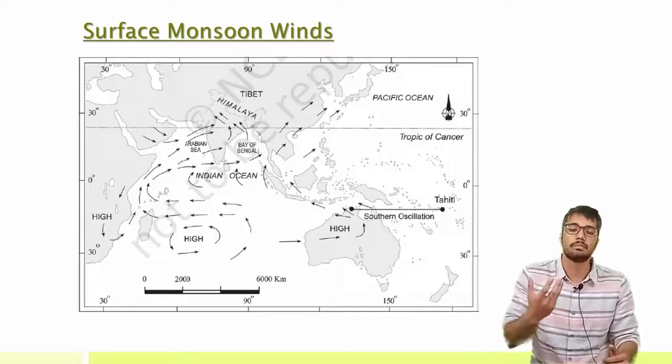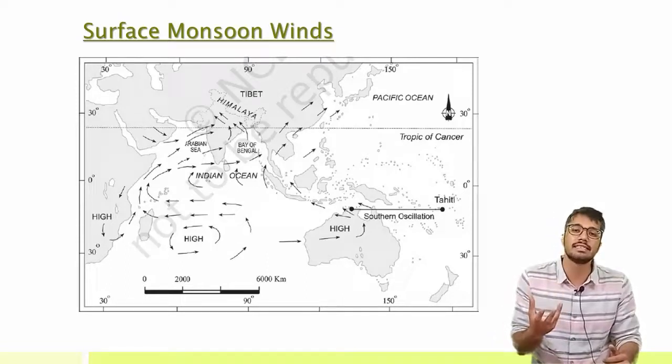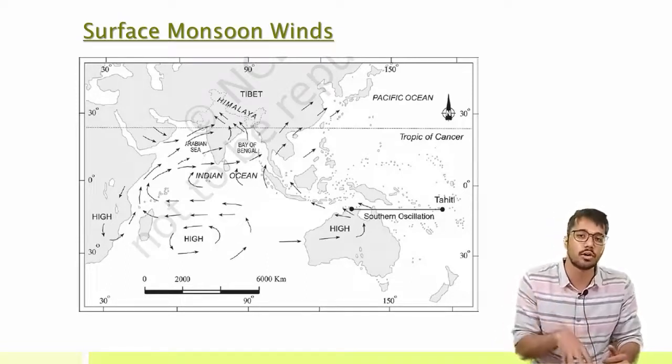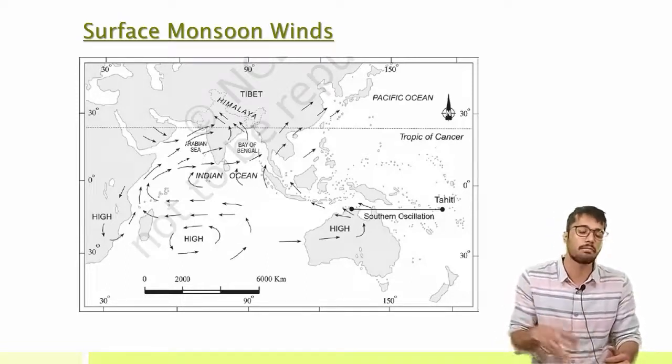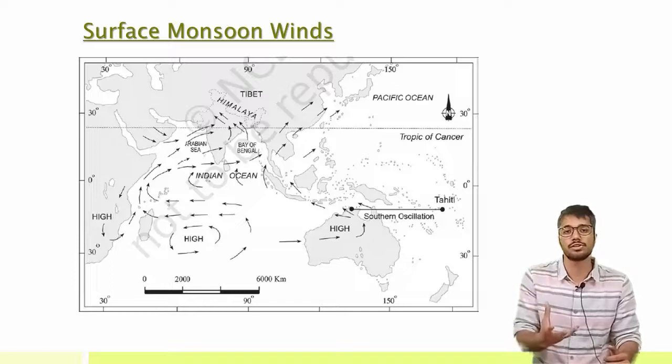This explains why the winds are reversed: due to the presence of ITCZ in the north, where there is extreme low pressure, which attracts all the high pressure winds from surrounding regions.